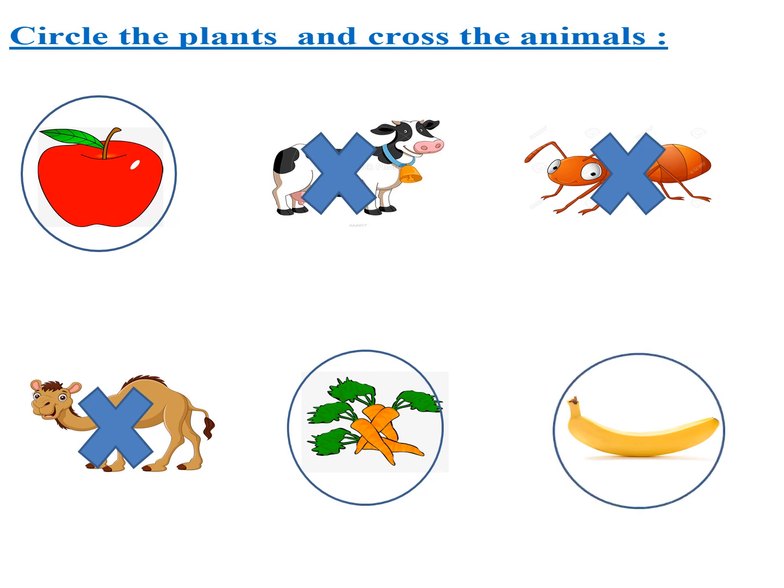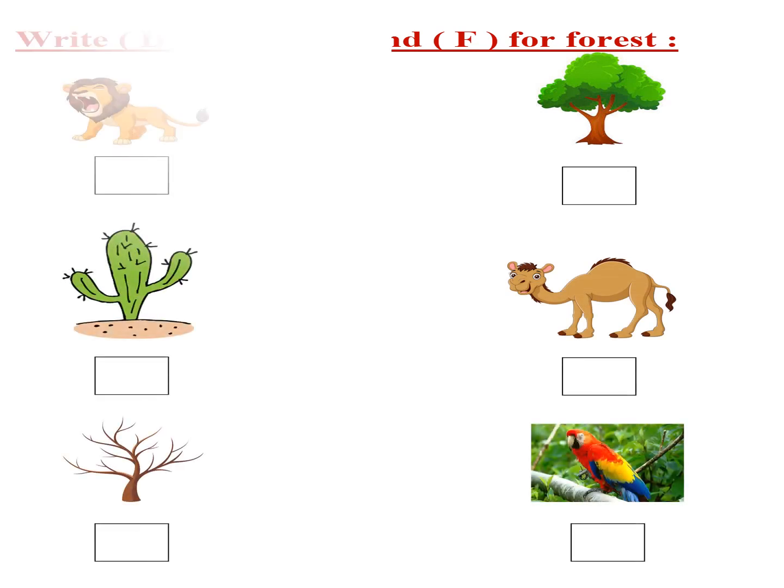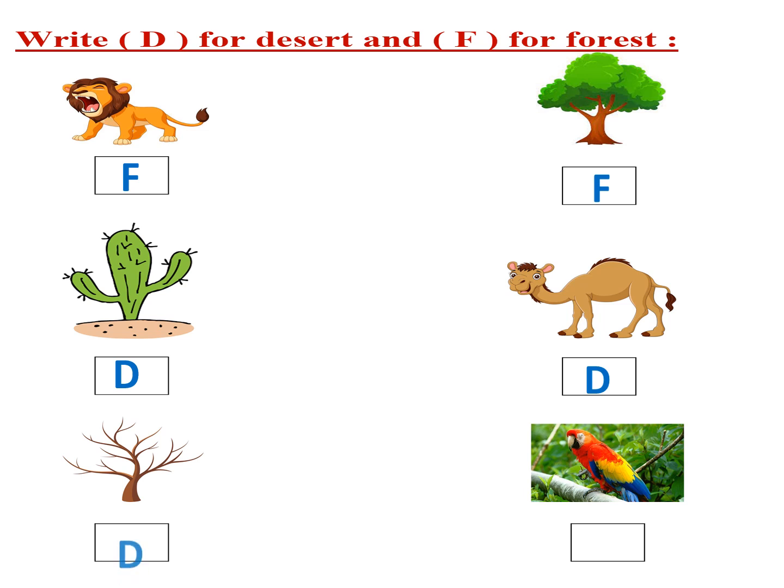Here we have to write D for desert and F for forest. What do you think about the lion? Yes, excellent! It's a forest animal. Where can we find the tree? In the forest. The cactus in the desert. The camel in the desert. The trees like this in the desert. And the parrot in the forest.